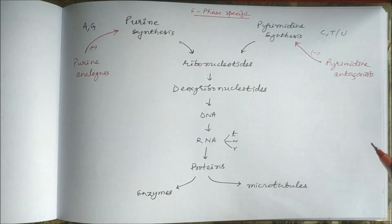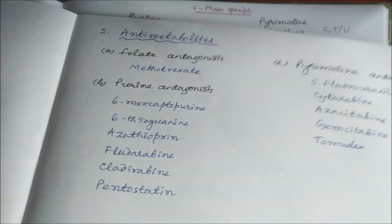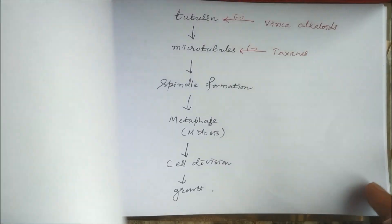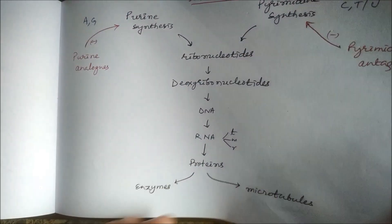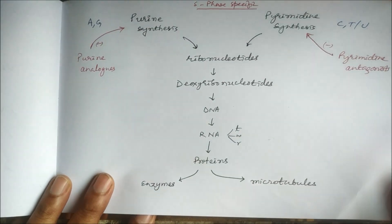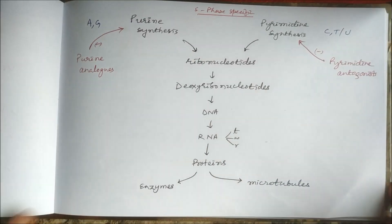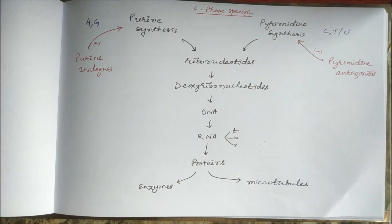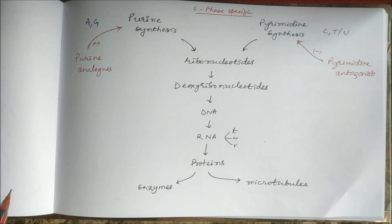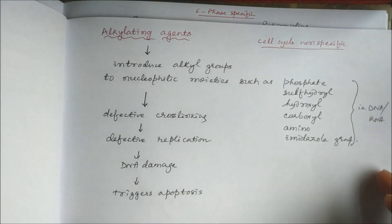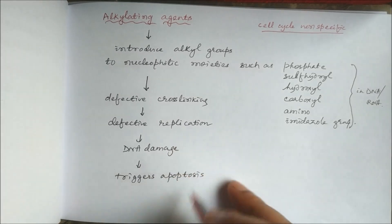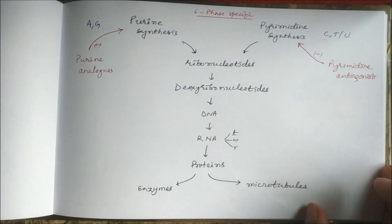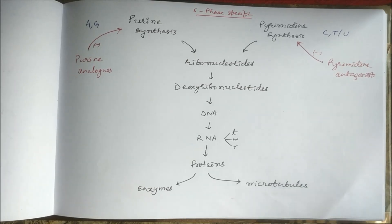Anti-metabolites are analogues of either purines, pyrimidines, or folates — methotrexate is the folate antagonist we use. When these anti-metabolites act, there will be abnormal DNA synthesis, causing defective replication and DNA damage, which triggers apoptosis. This is all about anti-metabolites.